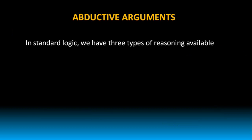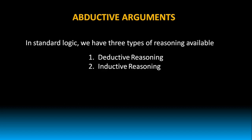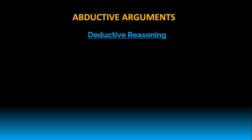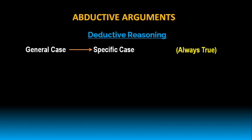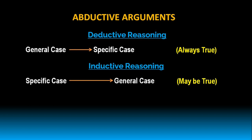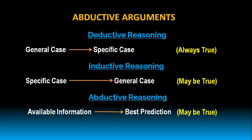In standard logic, we have three types of reasoning available: deductive reasoning, inductive reasoning, and abductive reasoning. In deductive reasoning, the reasoning always moves from general case to specific case, and the conclusion is always true. Whereas in inductive reasoning, the reasoning always moves from specific case to general case, and the conclusion might be true or might not be true. But in abductive reasoning, based on the available information, the best prediction is given, so the conclusion may be true or may not be true.